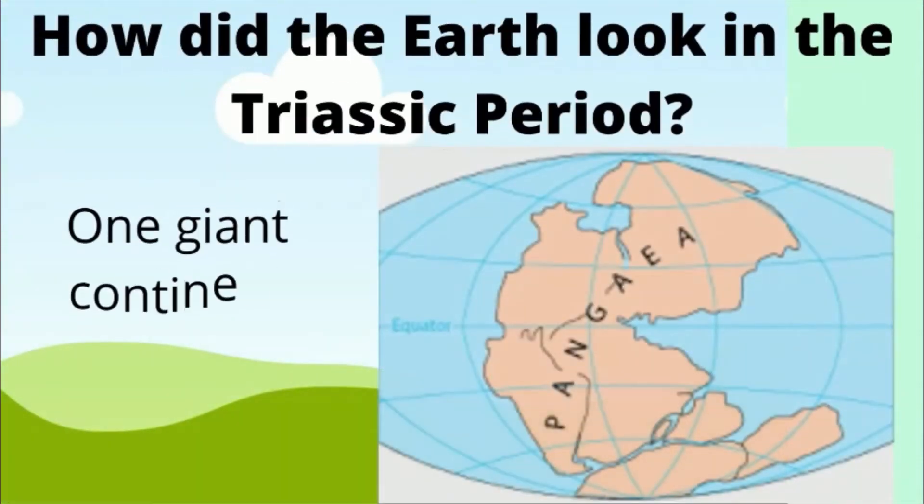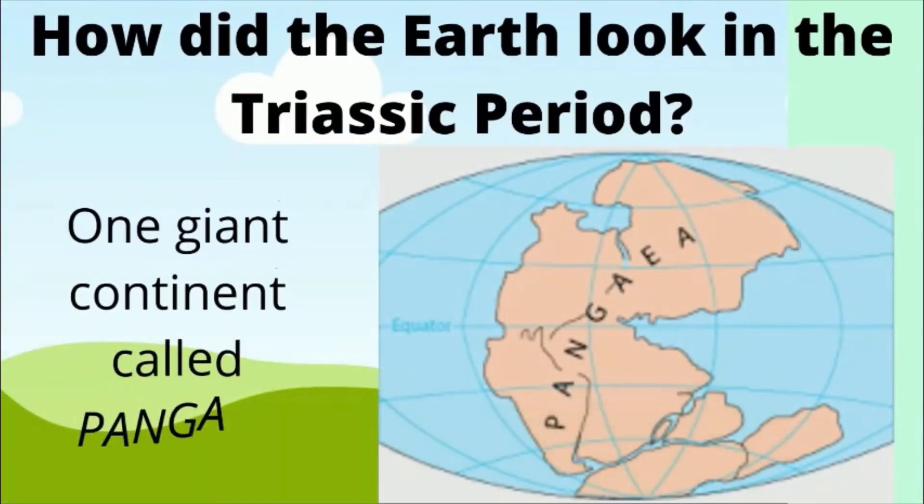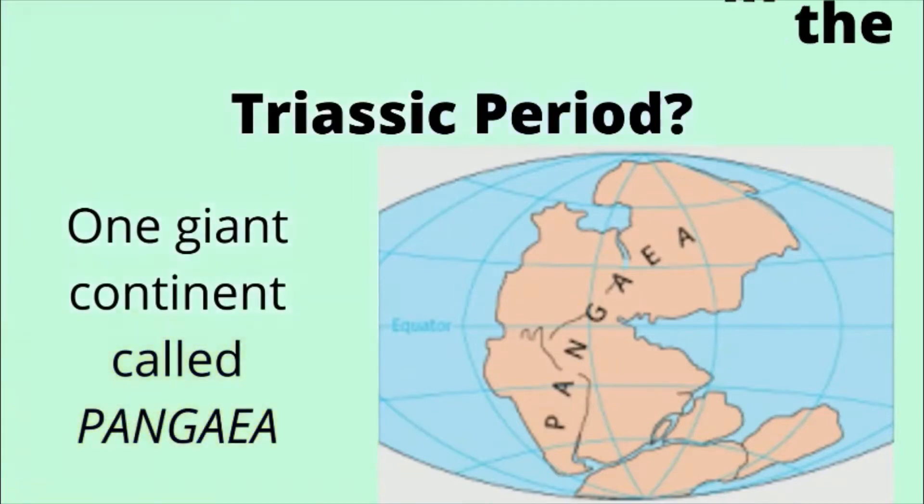How did the Earth look in the Triassic period? There was one giant continent called Pangaea.